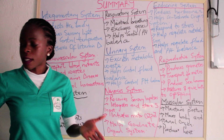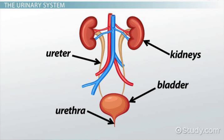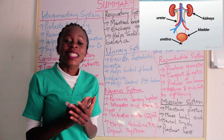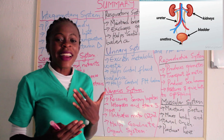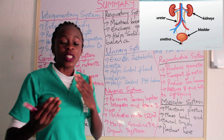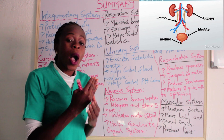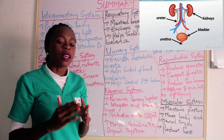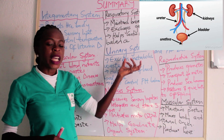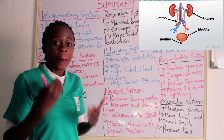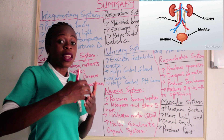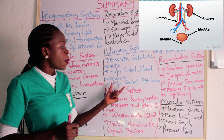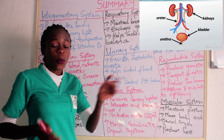The urinary system helps to excrete metabolic waste. Without the urinary system, there would be no urine, and waste products like urea would not leave the body. The urinary system includes your kidneys, bladder, urethra, and ureter. It helps to excrete metabolic waste, control fluid balance, and also regulate pH balance.